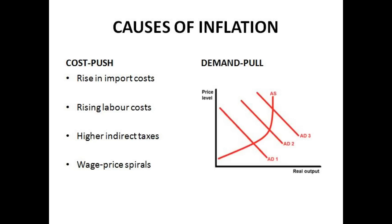Another cause of cost-push inflation is rising labour costs — a rise in the minimum wage or trade unions fighting for higher wages can lead to inflation. Higher indirect taxes are also a cost to the firm. If the government puts tax on cigarettes, for example, since cigarettes are relatively inelastic, the consumer will take the bulk of that tax. If the consumer is paying more, the price must be higher, and if the price is higher, that's inflation.